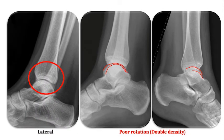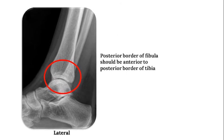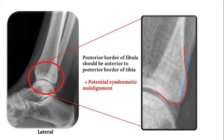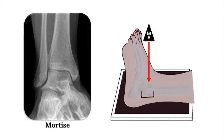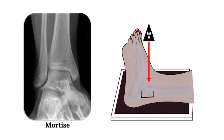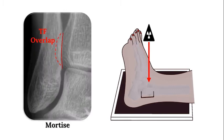On a perfect lateral x-ray, the posterior border of the fibula lies slightly anterior to the posterior border of the tibia. This is important because syndesmotic malalignment can oftentimes be detected on a lateral radiograph, but only if it is a perfect lateral radiograph. The mortise view is obtained by internally rotating the ankle approximately 10 to 15 degrees. This view allows assessment of the symmetry of the medial clear space in relation to the superior and lateral clear spaces, and is important for determining lateral translation of the talus, assessing syndesmotic alignment, and evaluating the medial clear space, tibiofibular overlap, and the tibiofibular clear space.